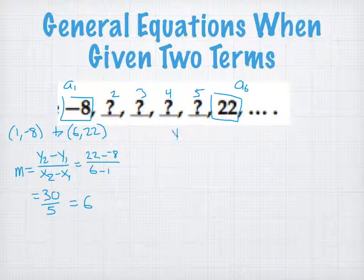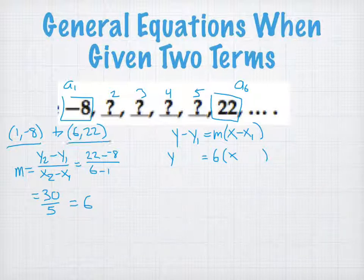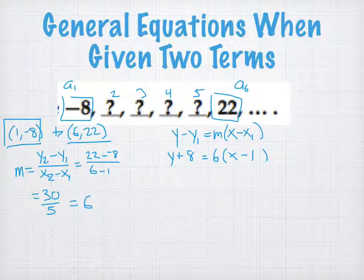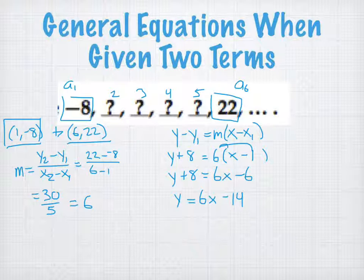Now plug into the point-slope formula with slope m equals 6. Using the point (1, -8): y minus negative 8 equals 6 times x minus 1, so y plus 8 equals 6x minus 6. Moving 8 to the other side: y equals 6x minus 14. Rewriting as an arithmetic sequence: a_n equals 6n minus 14.